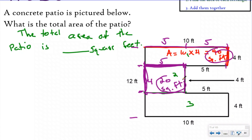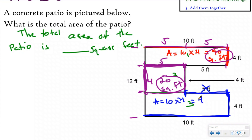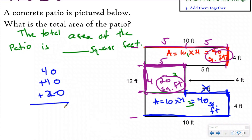Now I know 40 square feet and 20 square feet. I just need the area of rectangle three. The width is clearly four, but here's a common misconception — many people might pick five for the length, but five only goes from this part to this part, not the entire length. I'm actually going to use 10 as my length because that covers the entire rectangle. Ten groups of four gives an area of 40 square feet. Area is additive, so 40 plus 40 plus 20 gives a total of 100 square feet.